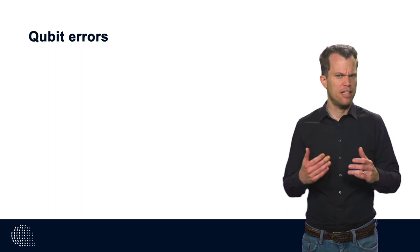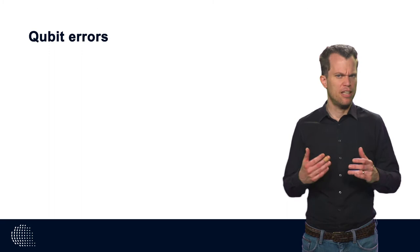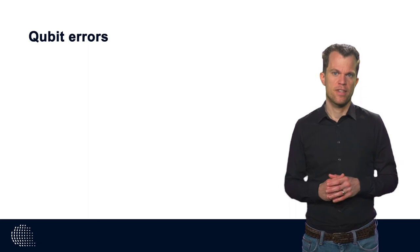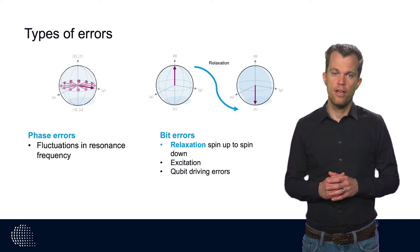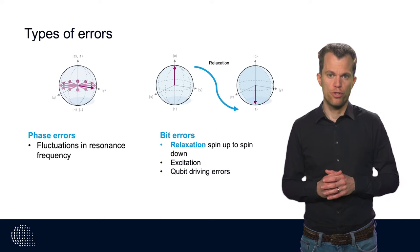We can distinguish between two sorts of errors. In information language, we would denote them as bit and phase flip errors. A bit flip error is an amplitude error and corresponds to a process where a qubit, for example initially in the state spin-up, relaxes to the spin-down state.